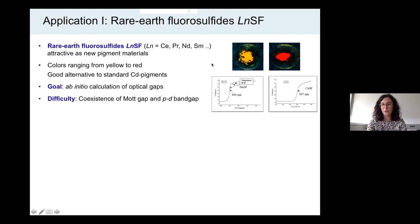For example, the yellow pigment here is samarium fluorosulfide, while the red one is cerium fluorosulfide. My goal was to calculate their optical properties, in particular the optical gap and the optical conductivity from first principles.